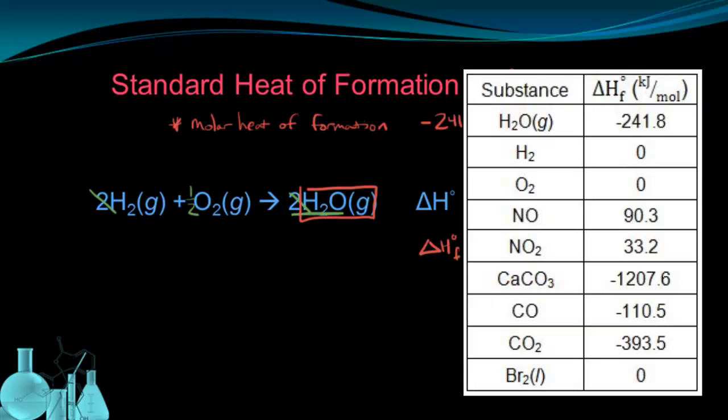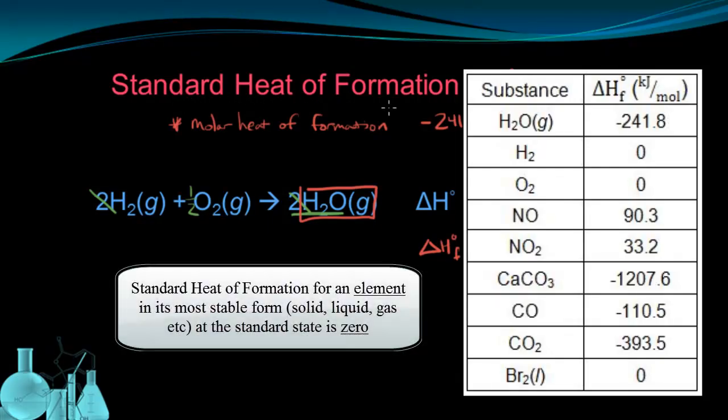The one important thing I'm going to point out for tables like this is that you'll note that elements that are in their most stable form, so hydrogen as a gas, oxygen as a gas, bromine as a liquid, those are their most stable forms, their standard forms. Their heats of formation are arbitrarily set to zero. We define the standard heat of formation for an element in its most stable form as zero kilojoules.